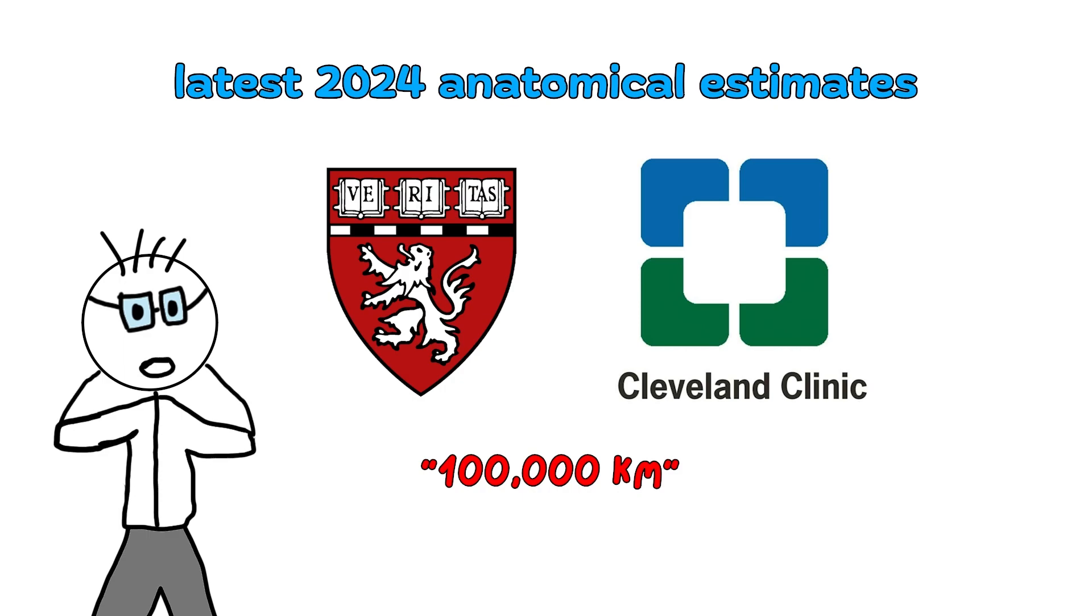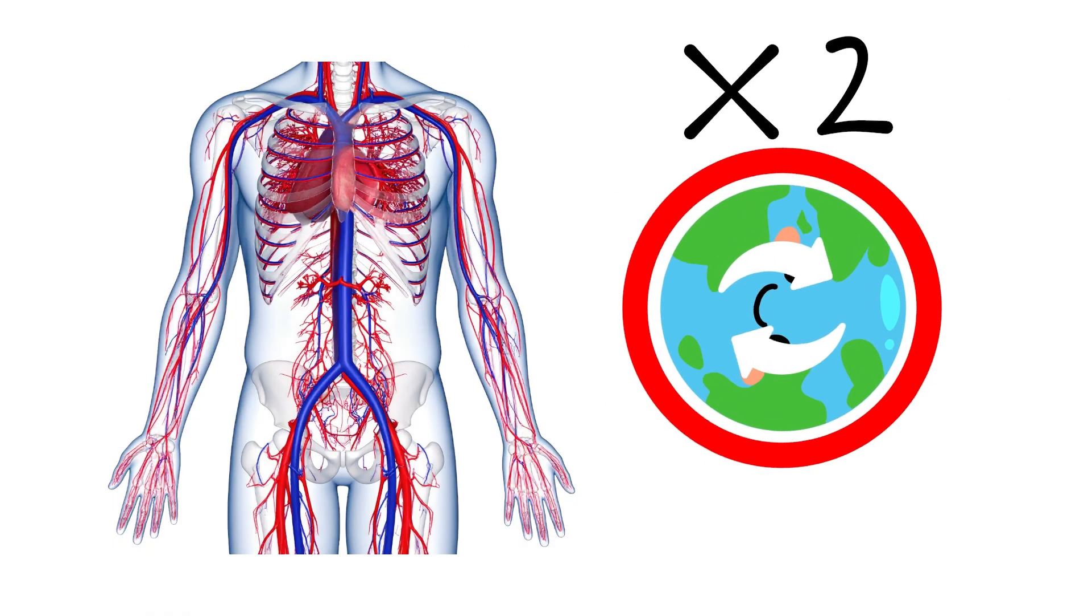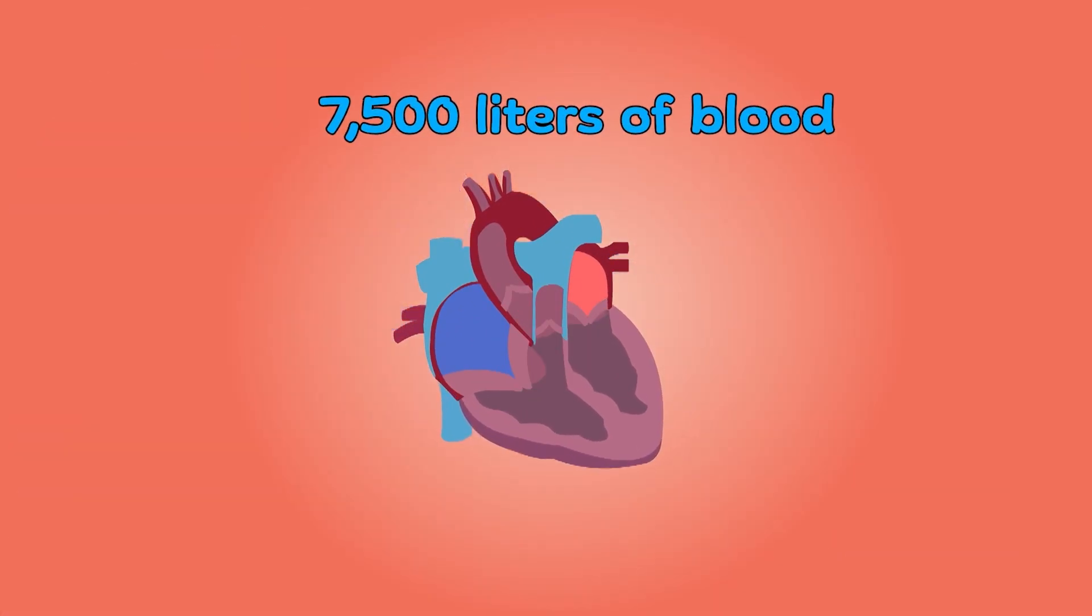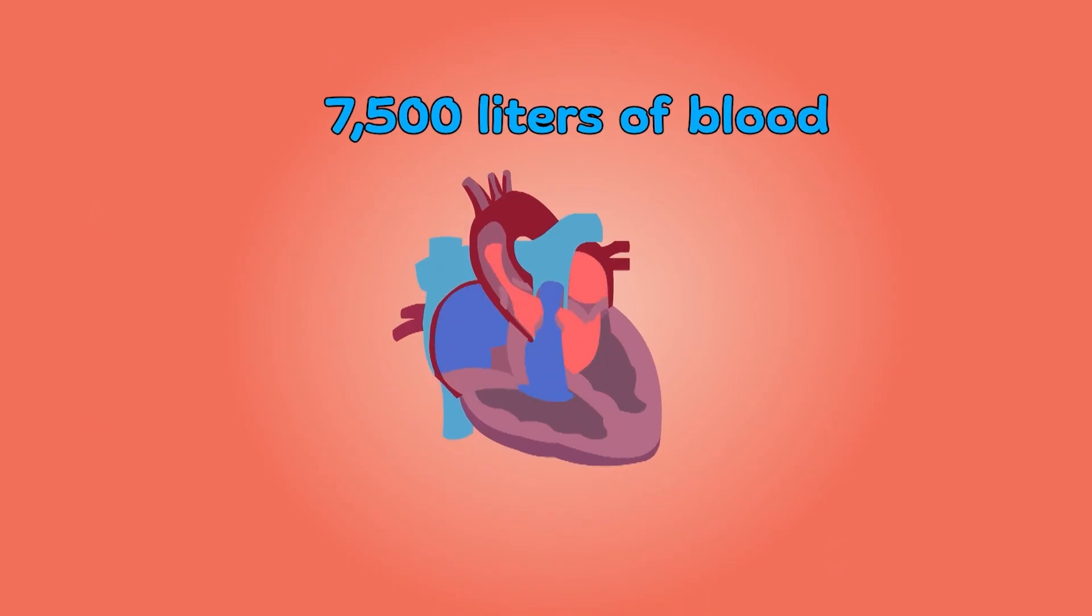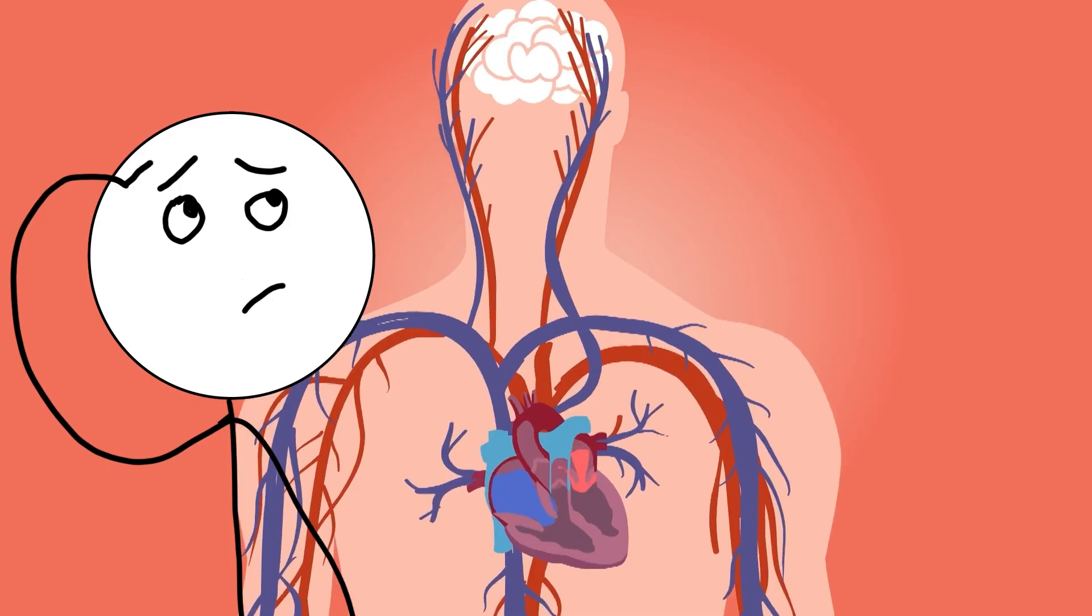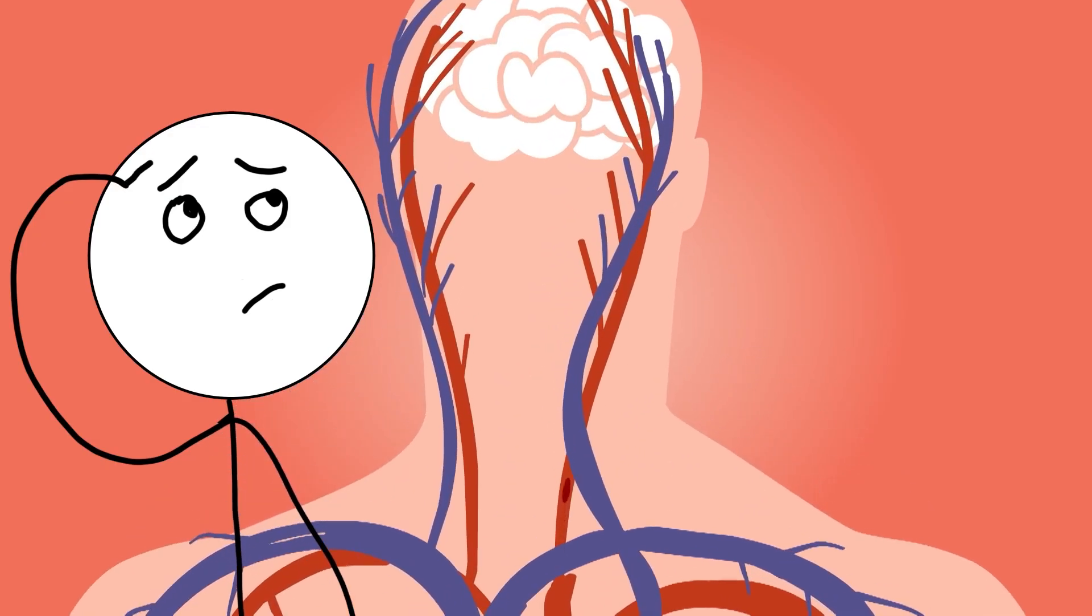That means your body's internal plumbing could circle the Earth more than twice. Inside that vast network, your heart pumps nearly 7,500 liters of blood every single day, keeping every cell alive and fed. It's hard to grasp that such cosmic scale exists inside something the size of your torso, but it does. You're not just a person, you're a walking planet of rivers.